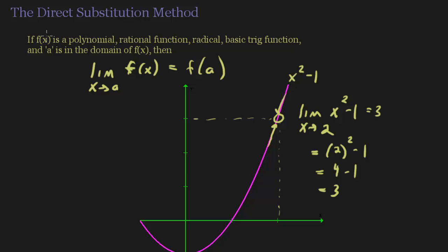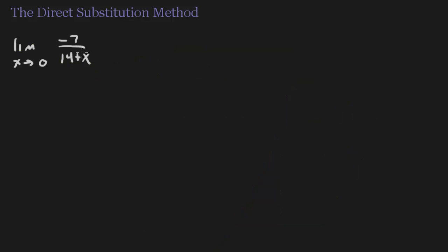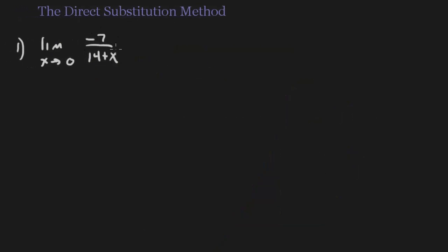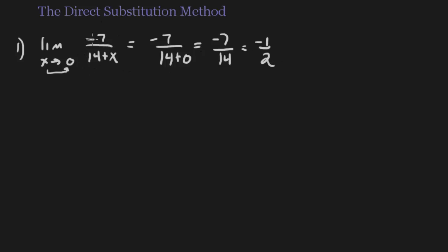But you've got to be careful that it is a polynomial, rational function, a nice function — and this is the most important part — that a is in the domain of f(x). So let's start with this example. This is a rational function. Notice the domain of this function is every x value except negative 14, because that would make the denominator 0. But since I'm approaching 0, and 0 is in the domain of this rational function, all I'm going to do is plug in 0. So we get 14 plus 0, that's negative 7 over 14. That's negative one half. So the limit of this function is negative one half.